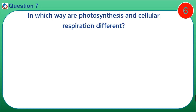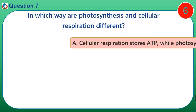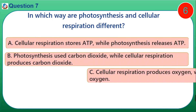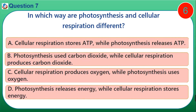Question 7. In which way are photosynthesis and cellular respiration different? A. Cellular respiration stores ATP while photosynthesis releases ATP. B. Photosynthesis uses carbon dioxide while cellular respiration produces carbon dioxide. C. Cellular respiration produces oxygen while photosynthesis uses oxygen. D. Photosynthesis releases energy while cellular respiration stores energy.